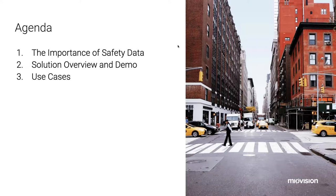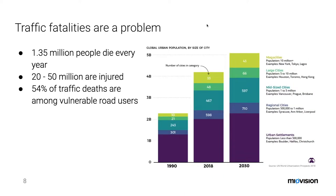The data that we're generating with Safety Analytics is fairly new and fairly novel. I've pulled together some hypothetical scenarios so you can see the data in action and get a sense of how the workflow could tie into your traffic engineering or road safety analysis. The reality is traffic fatalities are a problem. Looking at the World Health Organization's Road Safety Report, they found that every single year 1.35 million people die on the world's roads, with an additional 20 to 50 million individuals injured every single year.